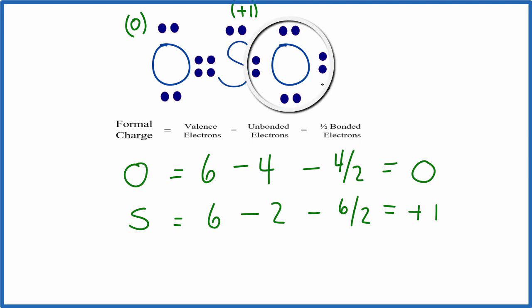And then this oxygen here, it is different. It has a single bond with the sulfur, whereas this has the double. So we need to calculate the formal charge. Oxygen equals 6 minus unbonded, 2, 4, 6, minus bonded, these two right here, divided by two. 6 - 6 - 2/2 = -1. So we have a formal charge of minus one for this oxygen right here. These are the formal charges for this Lewis structure.